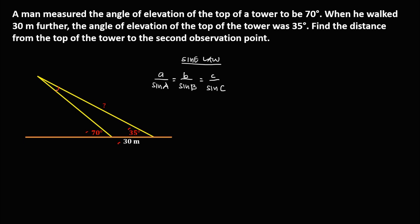If this angle is angle A, then this side is side A. If this angle is angle B, then this side is side B. And if this angle is angle C, then this side is side C. Since we can solve angle B — because a straight angle equals 180 degrees — angle B is equal to 110 degrees.